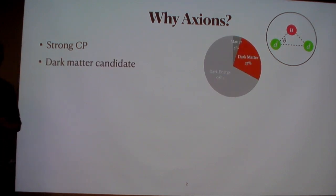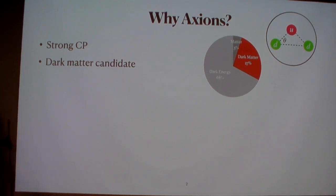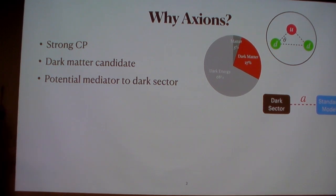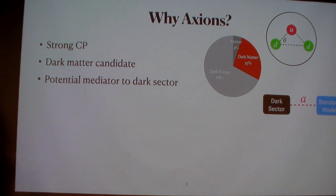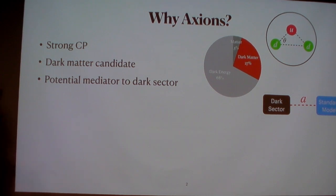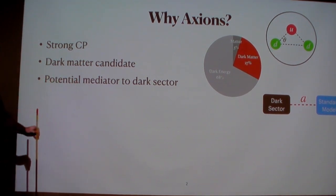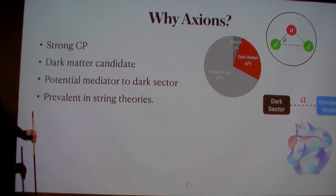Shortly after being proposed as a solution to the strong CP problem, it was proposed as a dark matter candidate — one of the first examples of very light dark matter candidates being produced non-thermally. Now that we haven't seen any dark matter in direct detection and indirect detection experiments, it hints that dark matter may exist within a sector which is completely dark — not charged under any standard model gauge groups, only interacting very weakly through some mediator. One example would be an axion, which we can study as a mediator rather than just as dark matter.